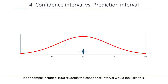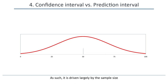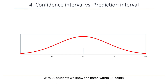The confidence interval tells us how precisely we have estimated the mean, and as such it's driven largely by the sample size. As the sample size increases, our estimate of the mean becomes more precise. With 20 students, we know the mean within 18 points. With 100 students, we know the mean within 8 points. With 1000 students, we know the mean within 2 points.